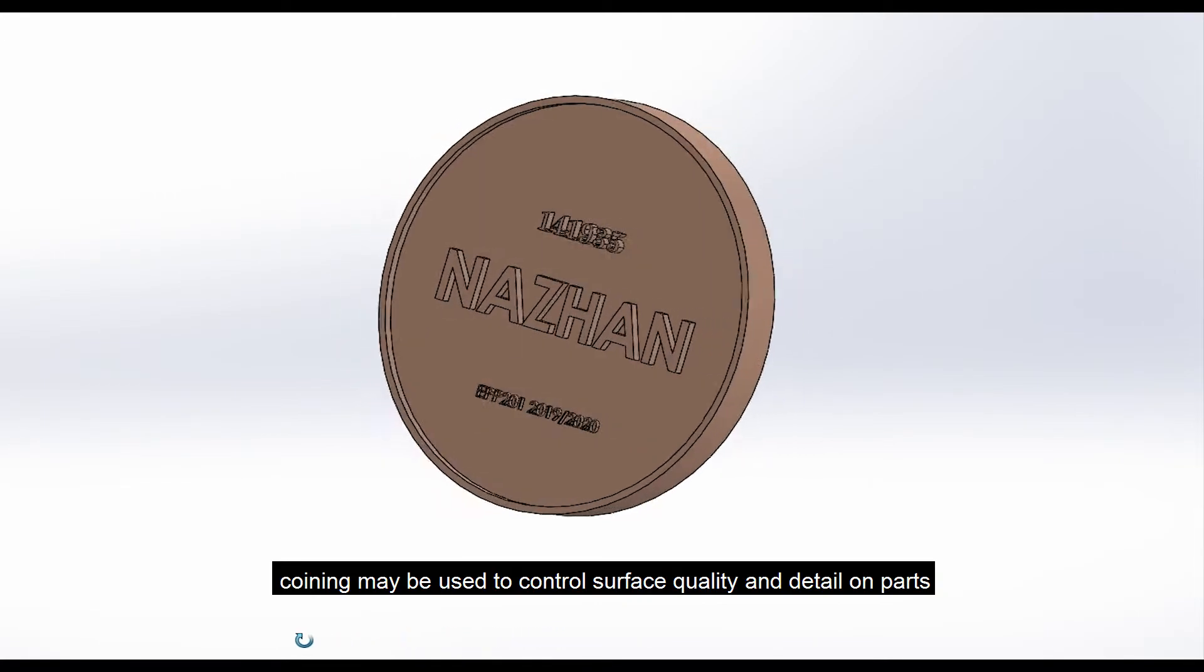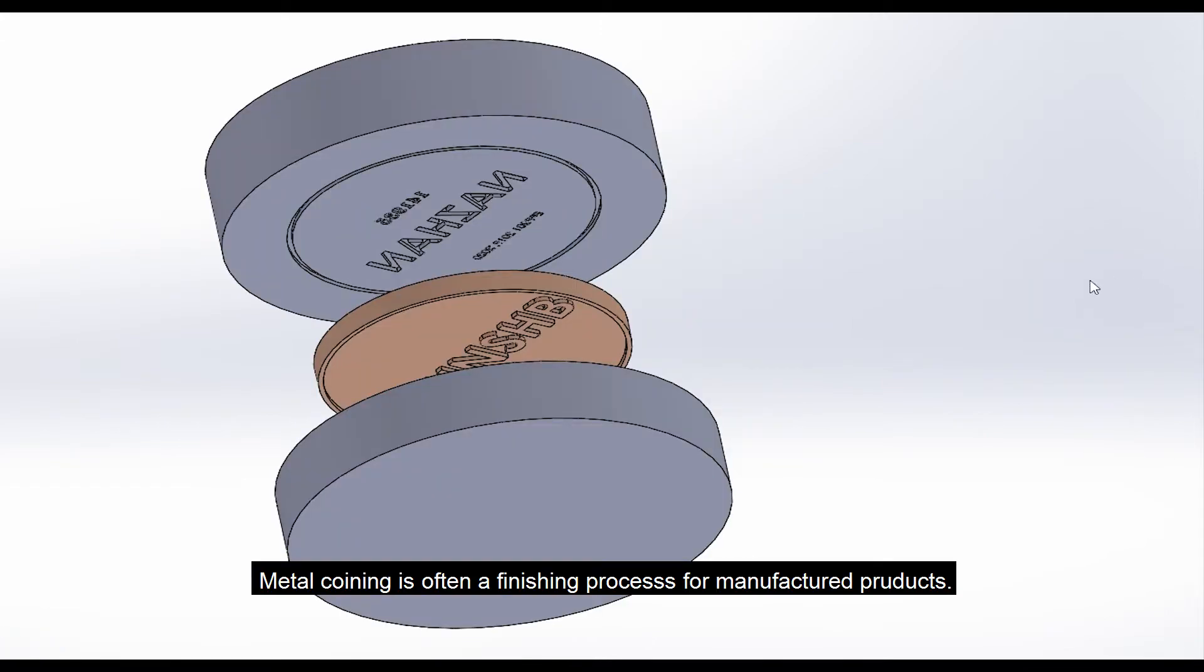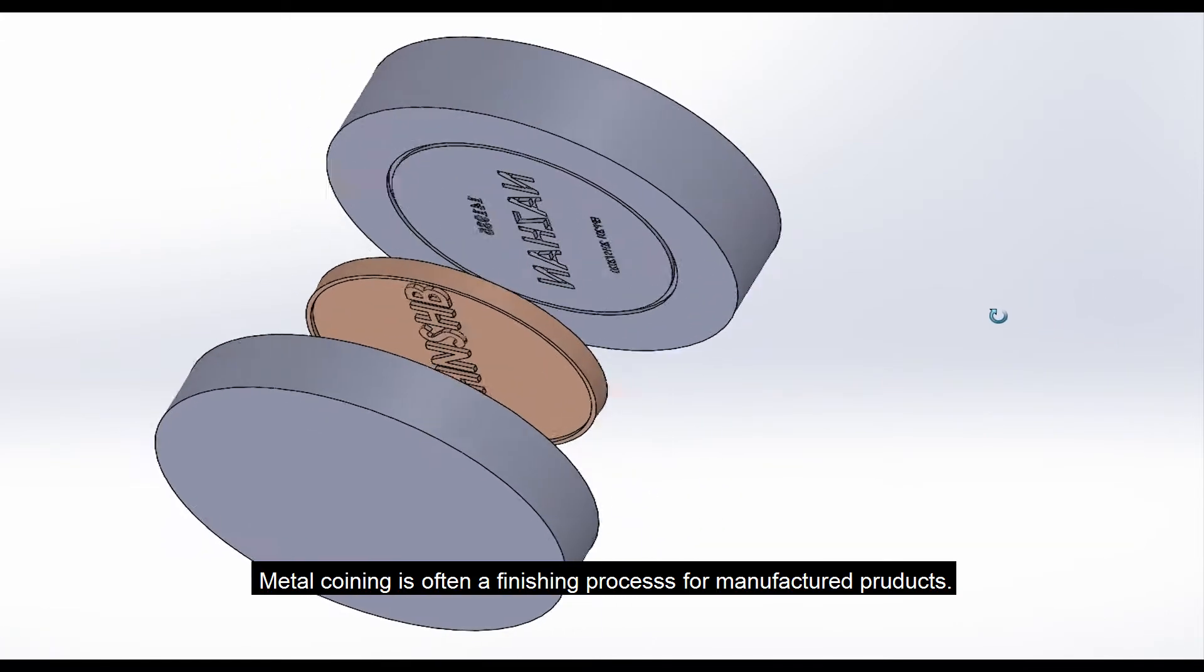Coining may be used to control surface quality and detail on parts. Metal coining is often a finishing process for manufactured products.